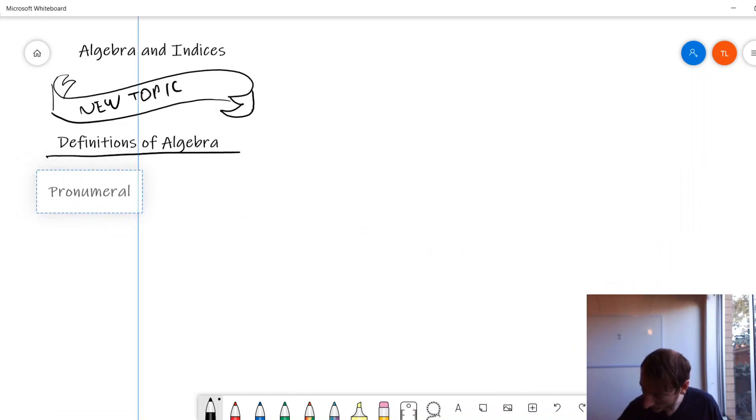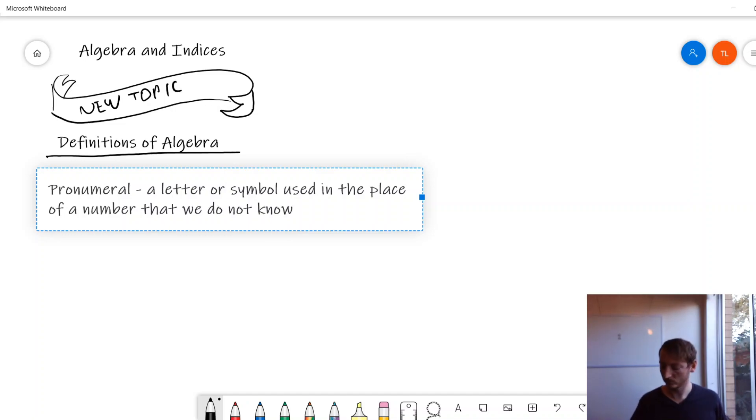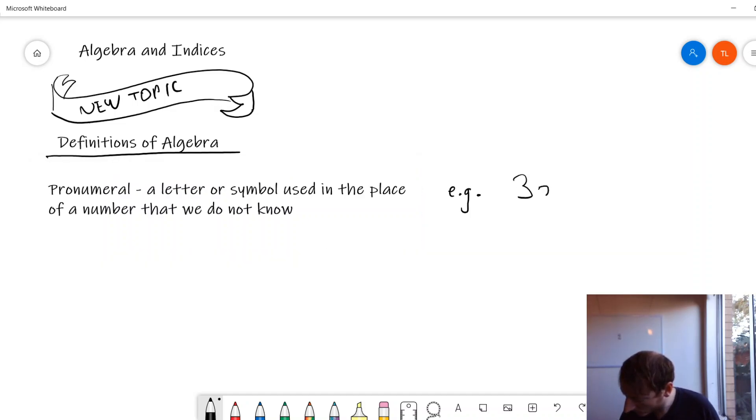Let's move it over here. So, pronumeral. A letter or symbol used in the place of a number that we do not know. For example, x, y, z, a, b, c - those are pronumerals. All right.